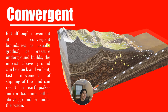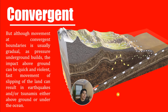Although movement at convergent boundaries is usually gradual, as pressure underground builds, the impact above ground can be quick and violent. Fast movement or slipping of the land can result in earthquakes and/or tsunamis, either above ground or under the ocean.